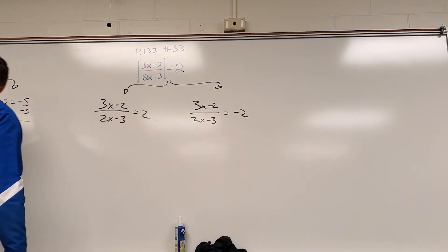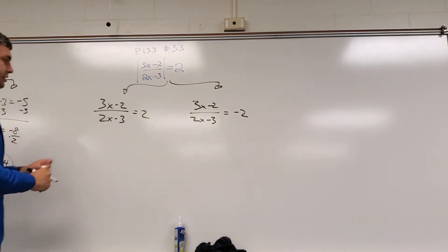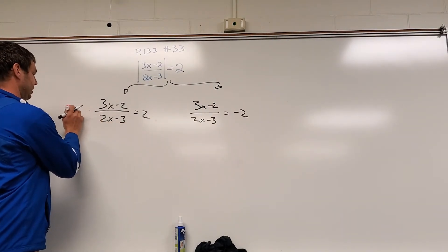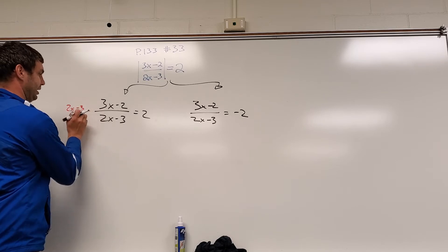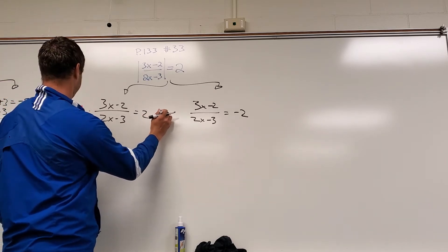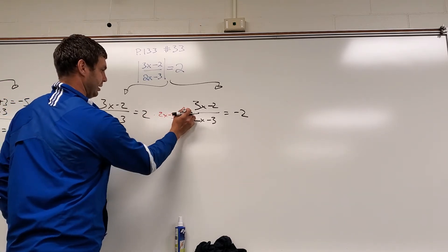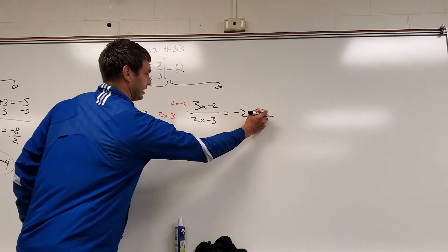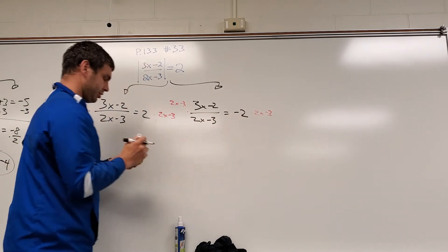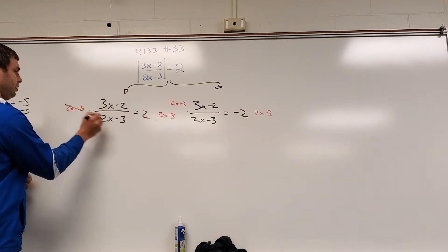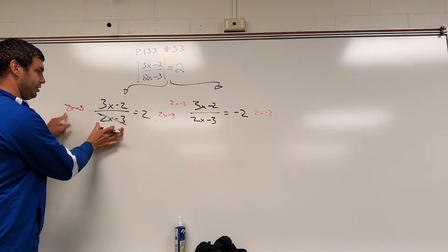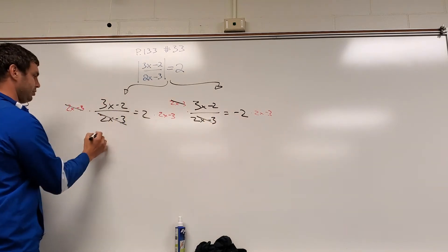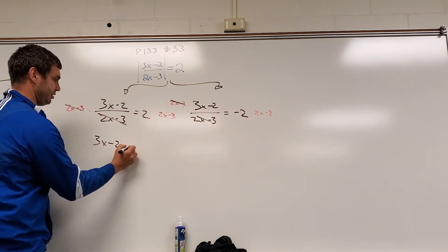The next thing we want to do is multiply both sides by the denominator — times (2x minus 3). I'm going to do that to both problems. Multiplying (2x minus 3) will cancel the denominator on the left side for both problems, leaving us with just the numerator: 3x minus 2.